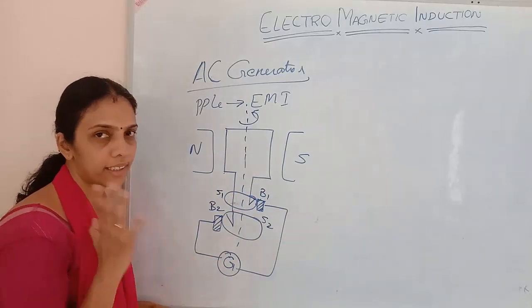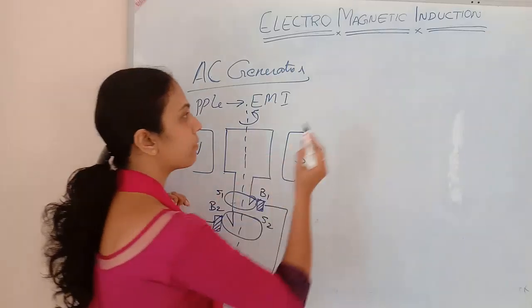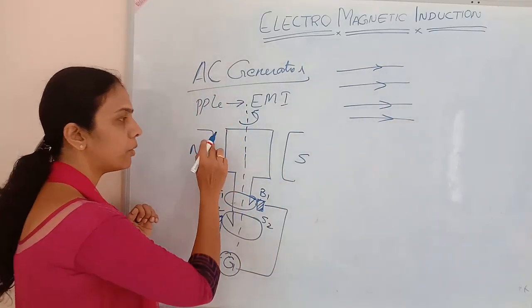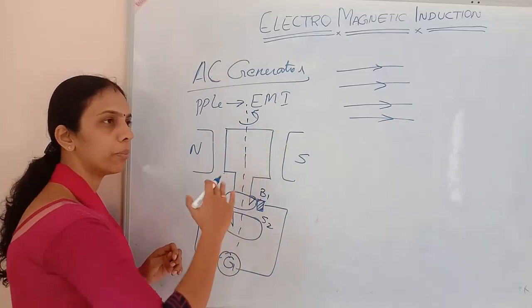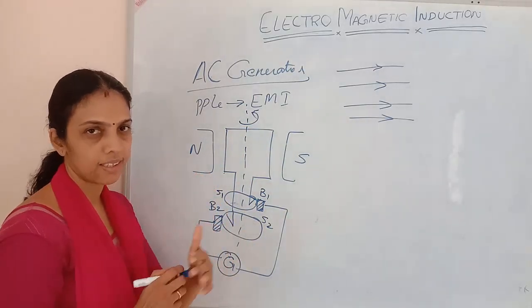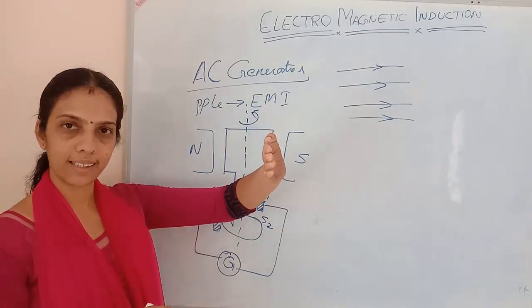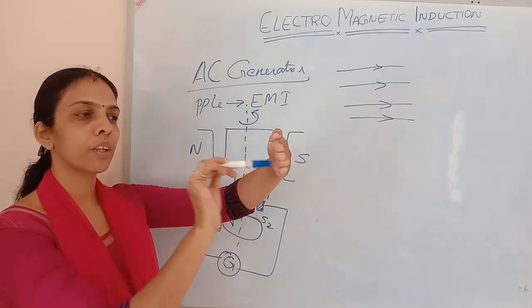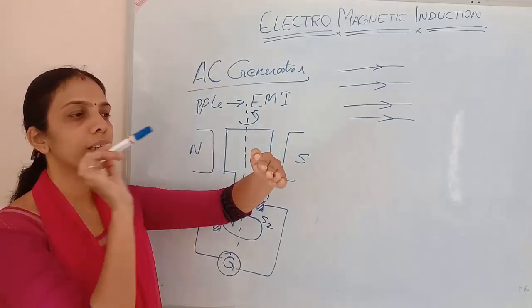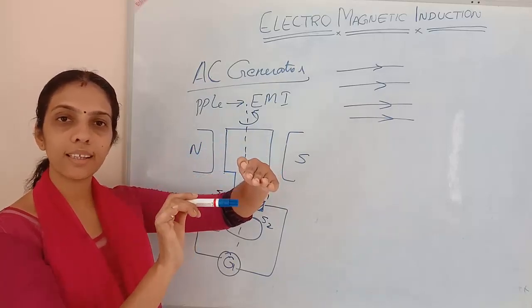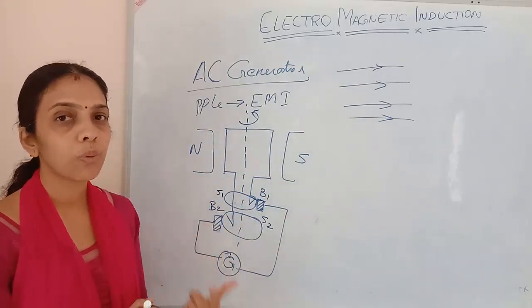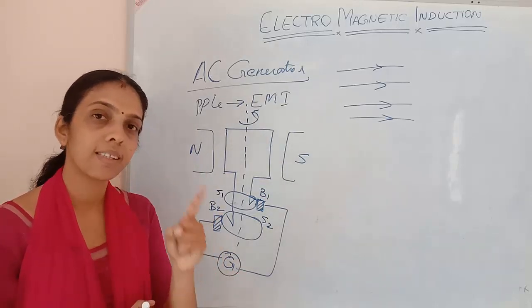How is current generated when the coil is rotating? The magnetic field passes from north to south pole, and in between, the coil is rotating. While it is rotating, the magnetic flux linked with the circuit changes. When the coil is perpendicular to the field, many magnetic field lines pass through it, but as the coil rotates, fewer lines pass through — so the number of magnetic field lines, that is the magnetic flux linked with the circuit, is changing.